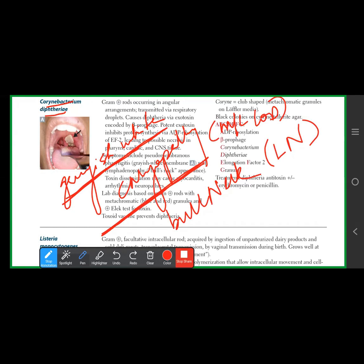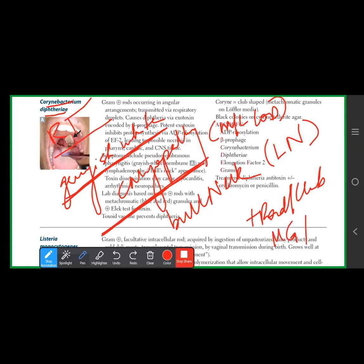Usually these presentations involve a respiratory tract illness, as it is transmitted by respiratory droplets. The organism is a gram positive rod, club-shaped, found in clumps joined by V or Y-shaped chains — described as Chinese character arrangement. The cytoplasm contains metachromatic granules.